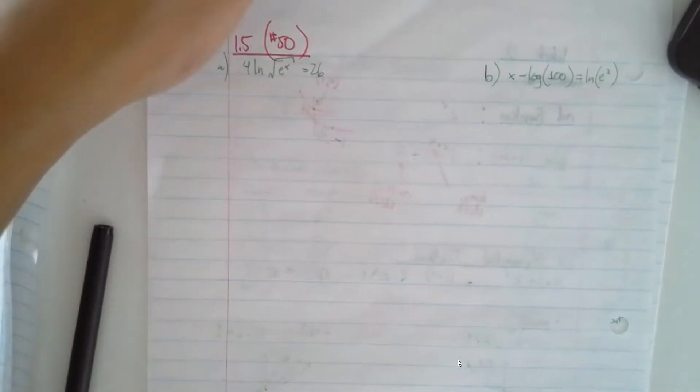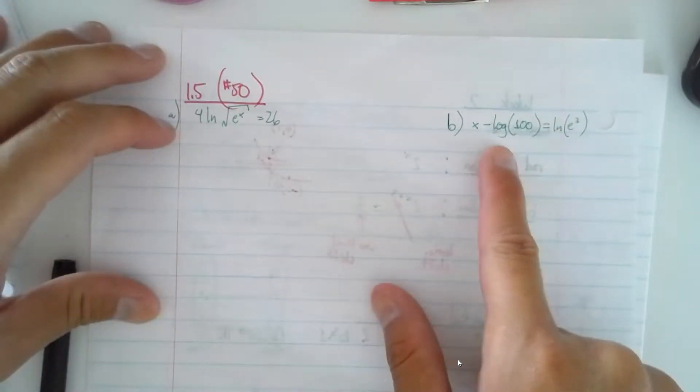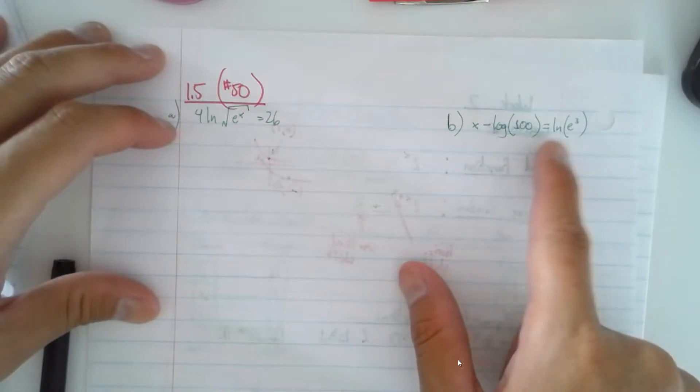So you can write these down. The first one is 4 times the natural log of the square root of e to the x power equals 26, and you have to solve for x. Here is x minus log of 100 equals the natural log of e to the third power.